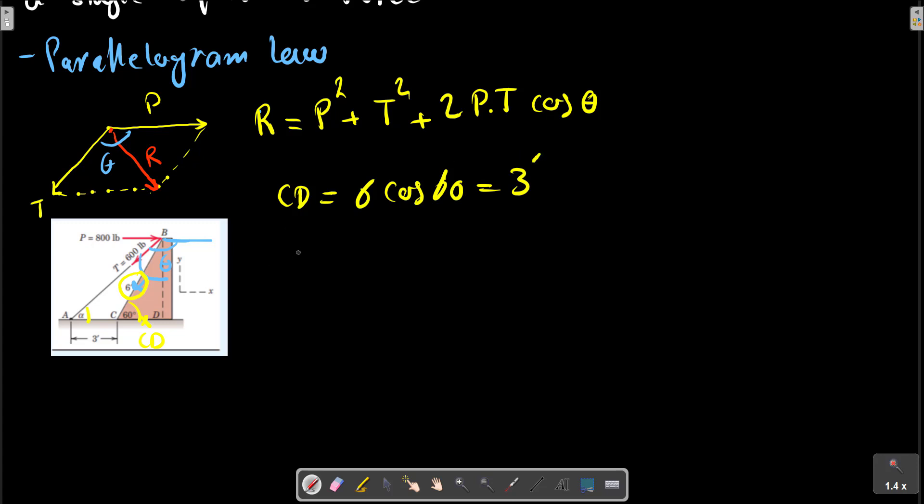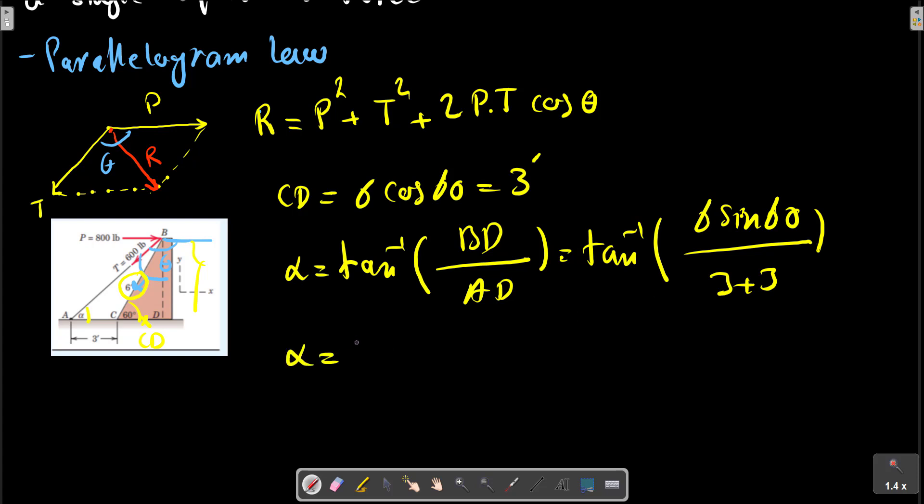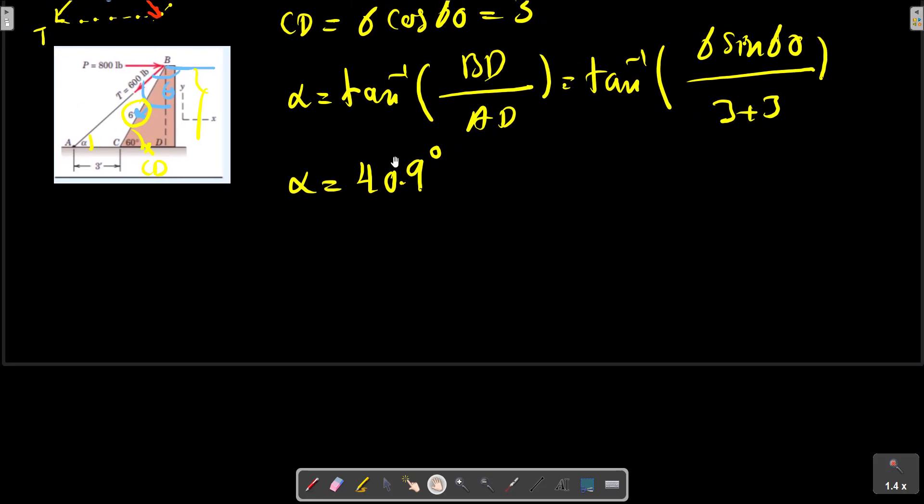So alpha is tangent inverse, this distance PD. So alpha can be calculated, and theta is 90 degrees.